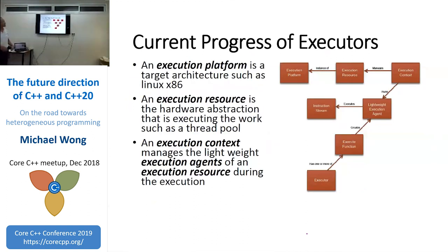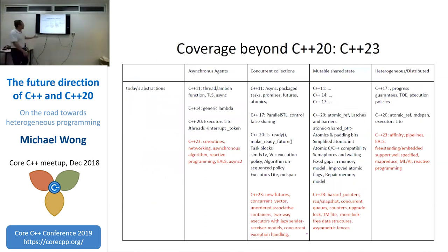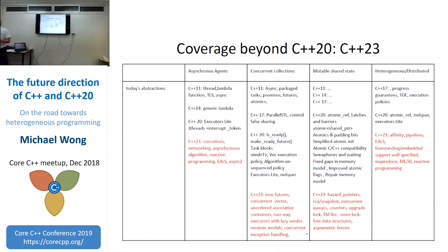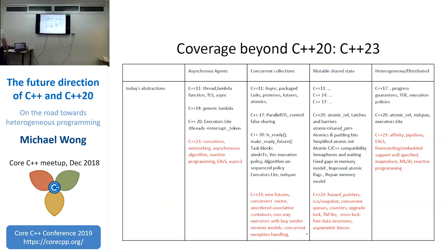The beauty of executors is that an executor has a context which manages execution resources, which then has some execution platform. At the same time, they have lightweight execution agents — because now everything is a thread of execution — which execute some instructions. The executor function creates these lightweight agents. For C++23: if coroutines and networking don't make C++20, they'll be there. We might have concurrent vectors, hazard pointers and RCU, and for heterogeneous computing — affinity, pipelines, agent local storage, machine learning and AI support.